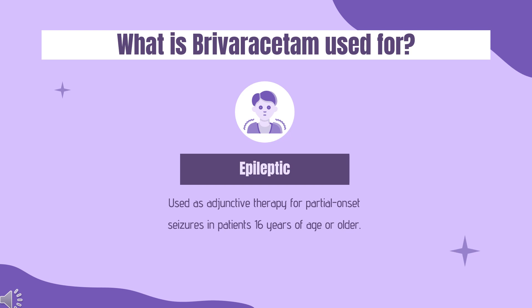What is Brivoracetam used for? It is used as adjunctive therapy for partial-onset seizures in patients 16 years of age or older.